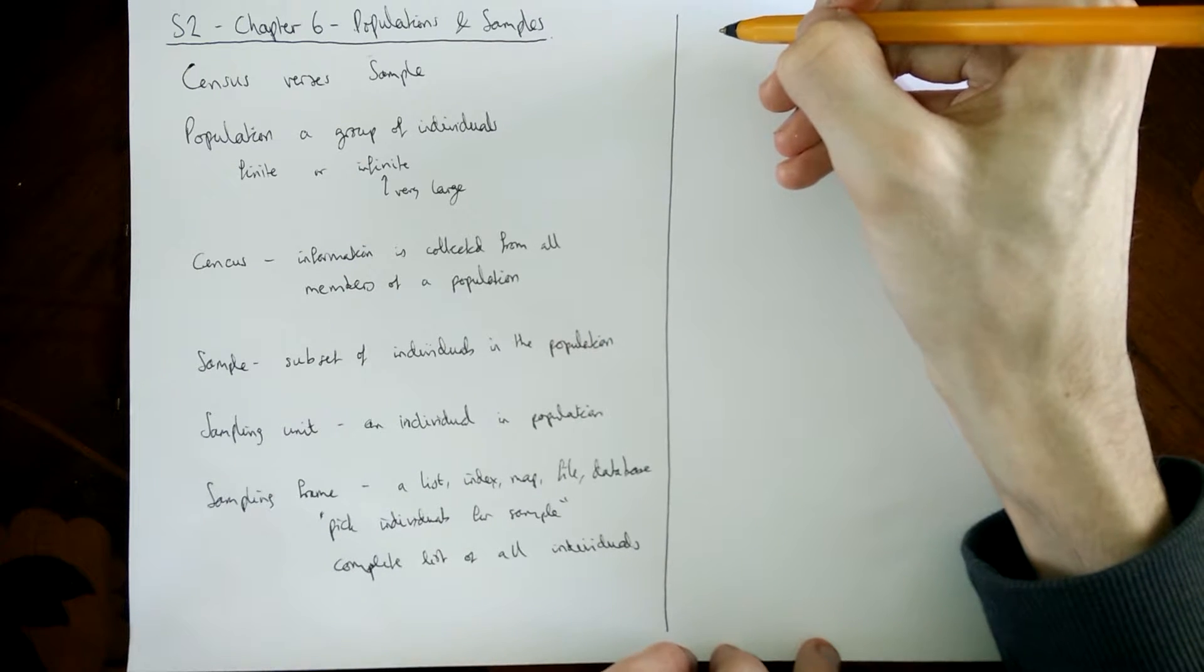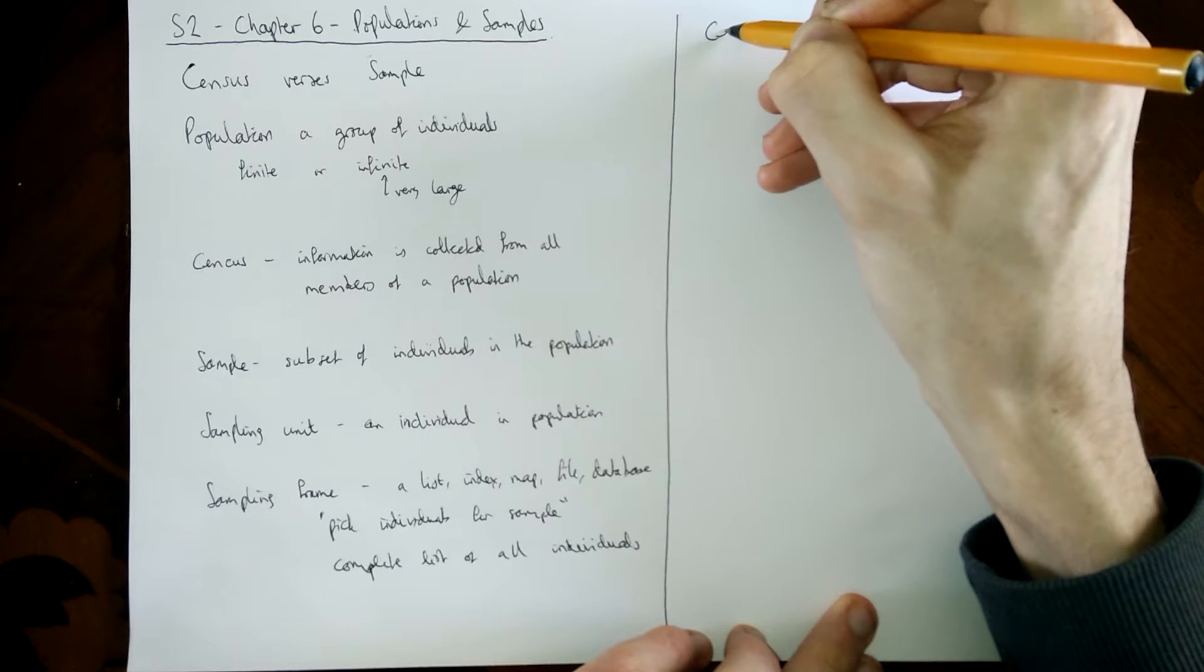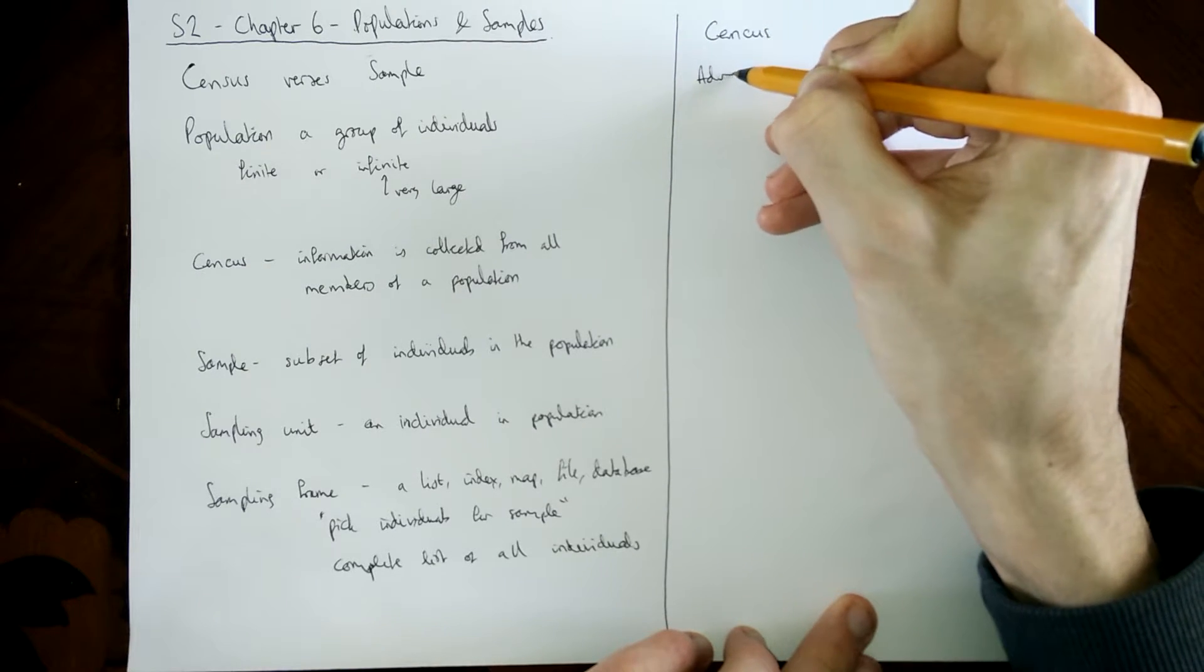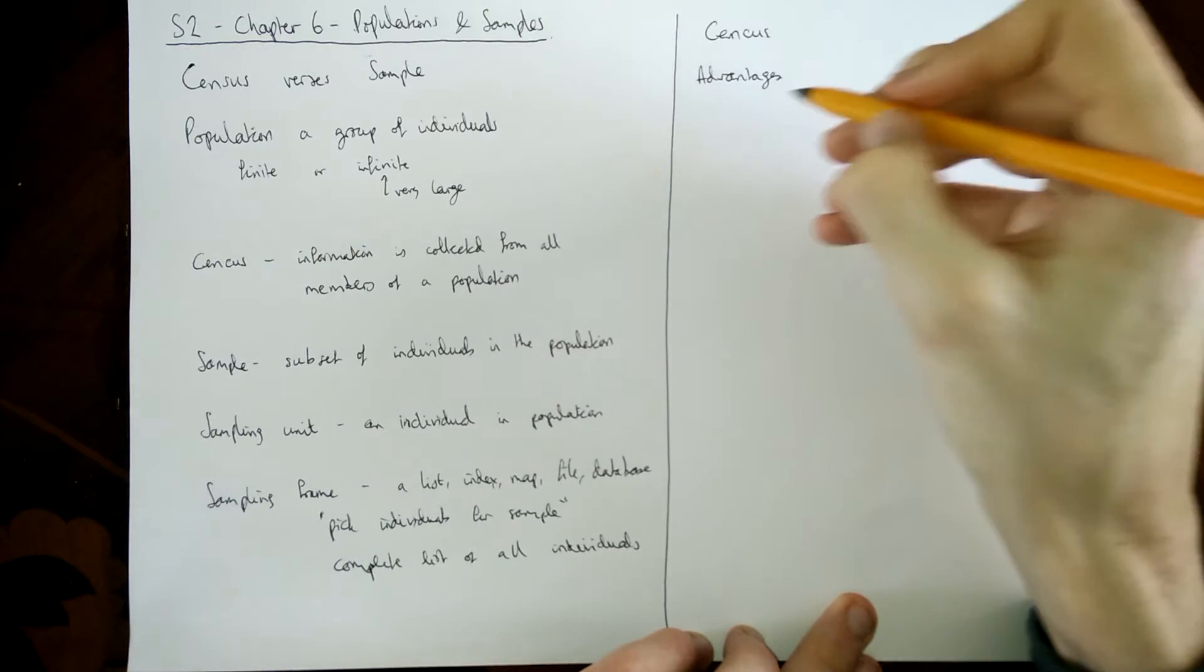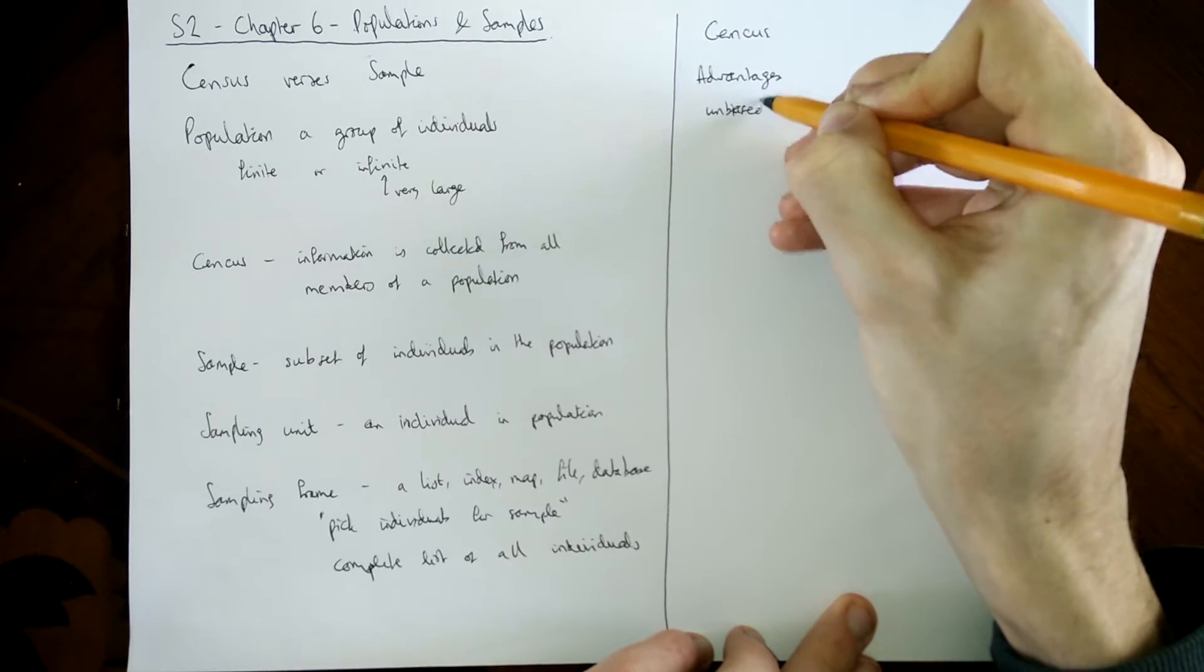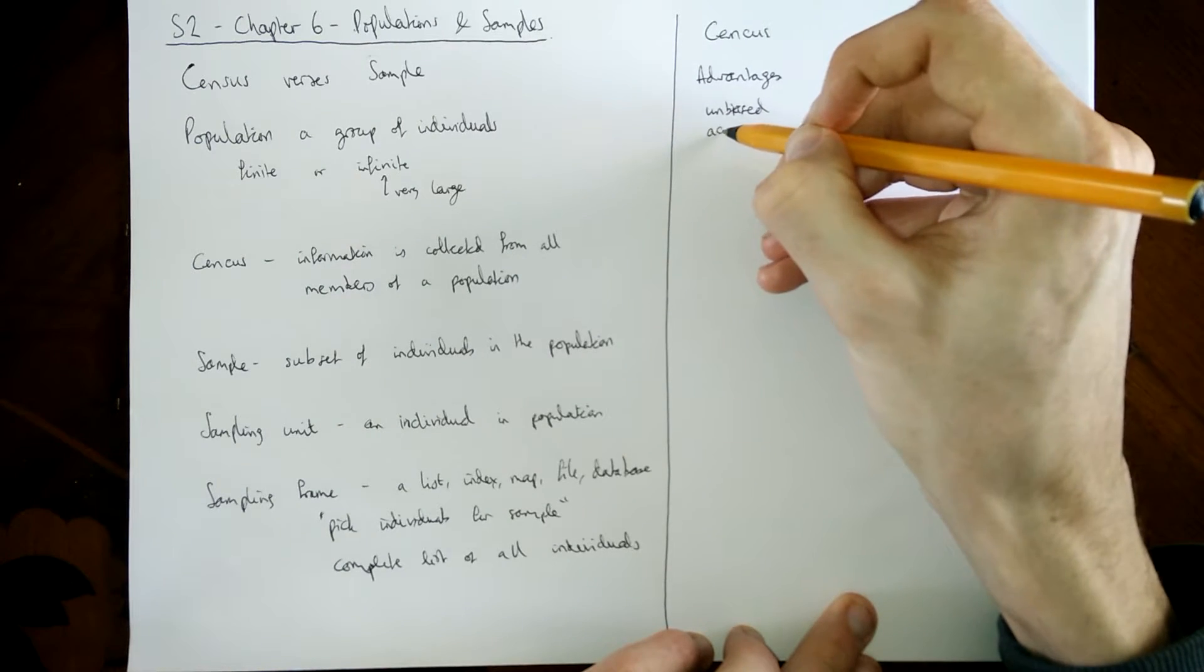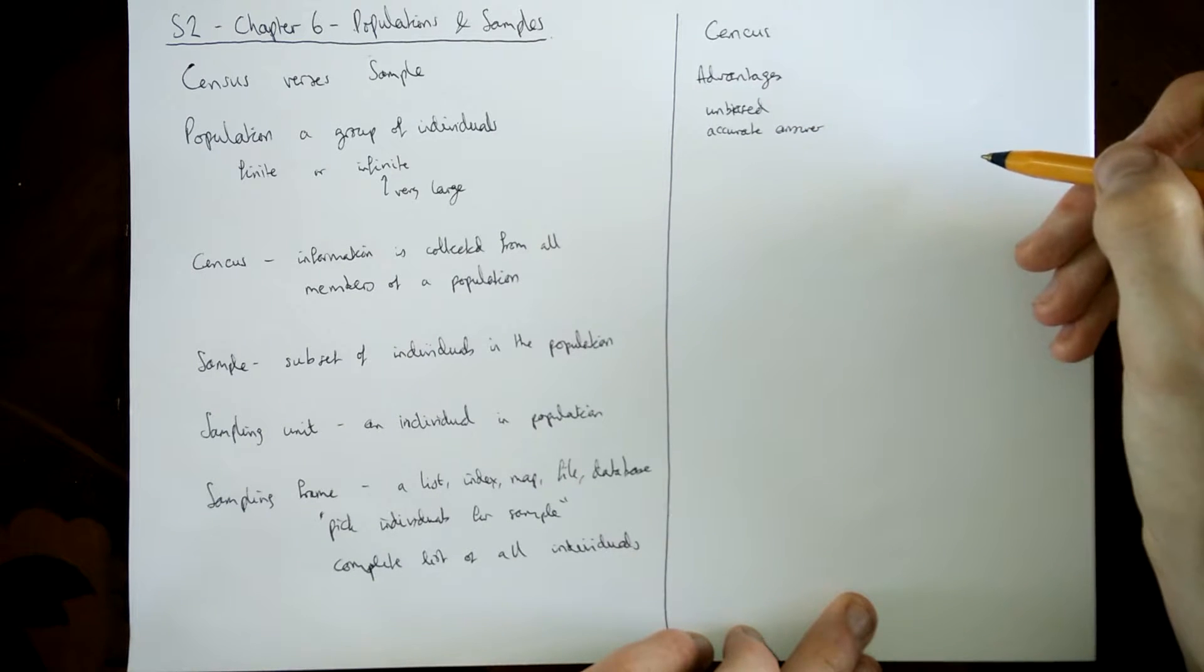Let's talk about the differences then between a census and a sample, and what the advantages are of each and disadvantages. So a census: what are the advantages of taking a census? Well, I guess the first thing is because you're actually asking the question or finding out the information from every single individual, that means that the answer you get is unbiased. There's no way you could ask certain numbers of the public just to make sure that it's skewed in your favor. So you get an accurate answer.